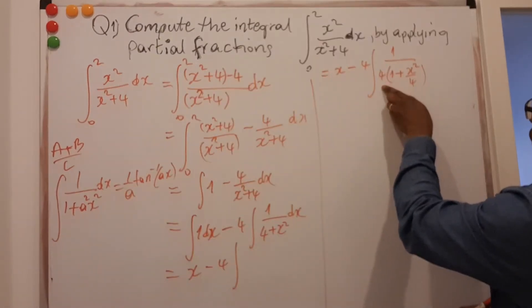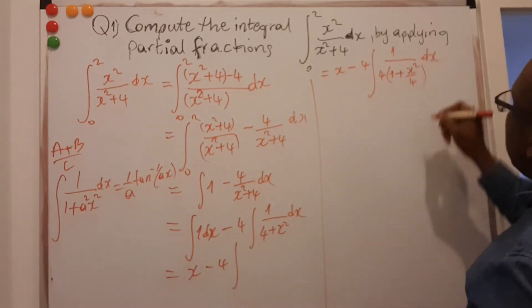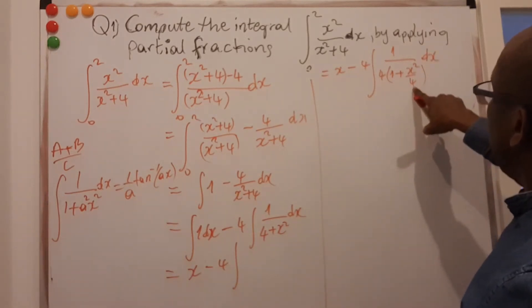So that if I open the brackets again, then this is 4 times 1 and this is 4 times that, and then they cancel out. So if I do that, I also see that 4 is like 2 squared.